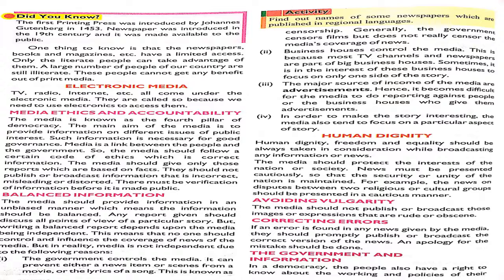If there is an error in the news given by the media, then it is published and broadcast, but the correct version of the news and the apology should also be given. The government and the information — because people always have the right to accurate information.